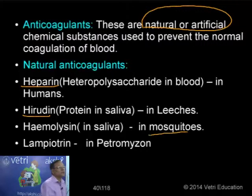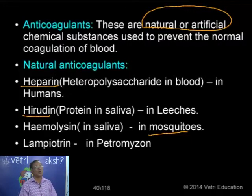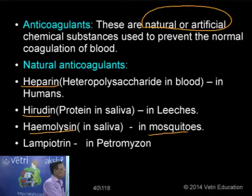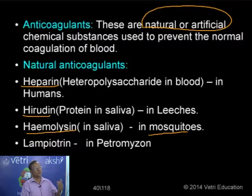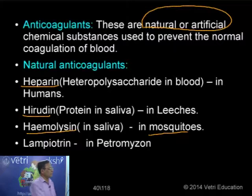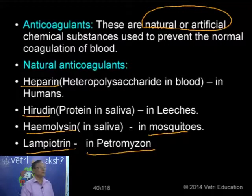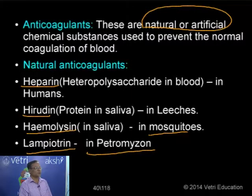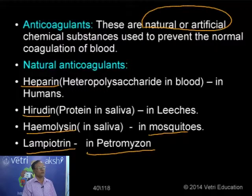In mosquitoes, a natural anticoagulant found in saliva is hemolysin, found in sanguivorous animals that feed on blood, allowing continuous flow of blood while they suck it. In the case of cyclostomates — jawless vertebrates like Petromyzon (the lamprey) — there is another anticoagulant called lamprein, released by this ectoparasite. These are some natural anticoagulants found in living organisms.